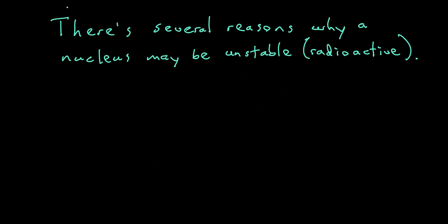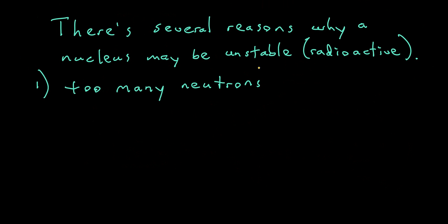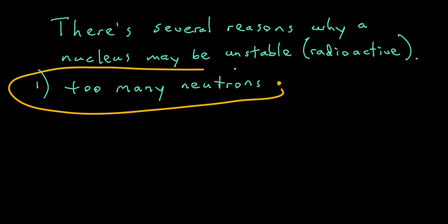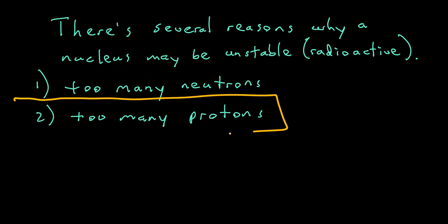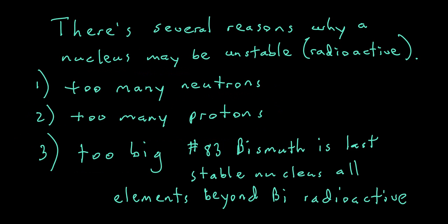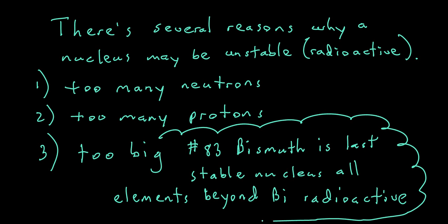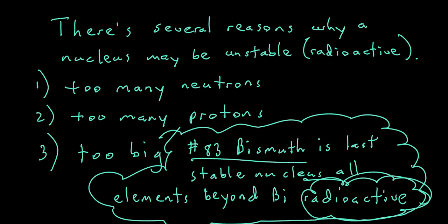There are several reasons why we say a nucleus is unstable or radioactive. One reason is the nucleus has too many neutrons. The second reason is there are too many protons in the nucleus. The third reason is the nucleus just gets to be too big. Element number 83, bismuth, is the last stable nucleus on the periodic table — all elements beyond number 83 are radioactive simply from being too large.